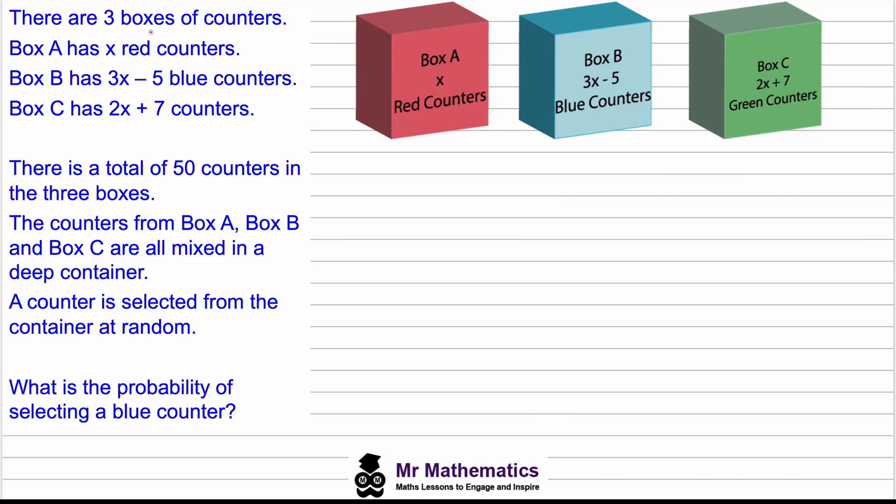There are three boxes of counters. Box A has X red counters. Box B has 3X minus 5 blue counters. And box C has 2X plus 7 green counters. There's a total of 50 counters in all three boxes.